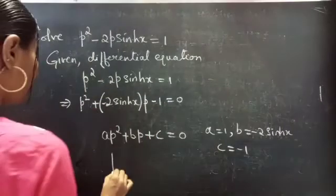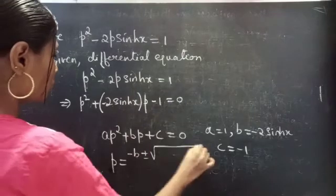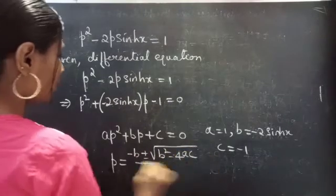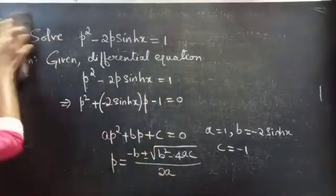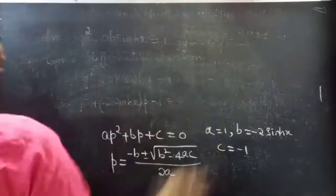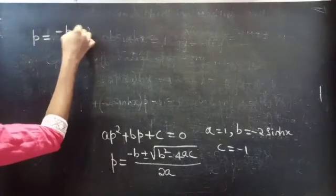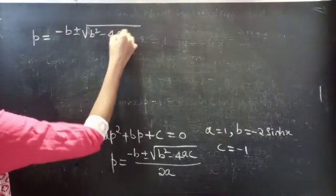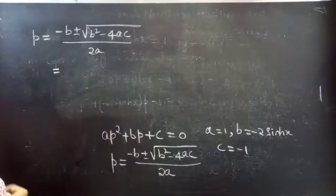We have the quadratic formula: P equals minus b plus or minus square root of b² minus 4AC, all divided by 2A. Now substitute the values of A, B, and C into this formula.